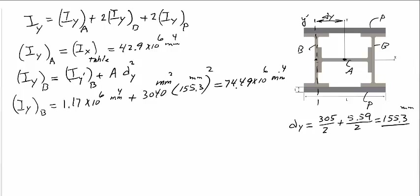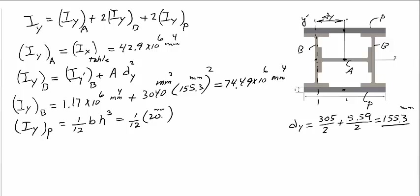For each plate's moment of inertia about the Y axis, the centroid of the plates lies on the Y axis, so the parallel axis theorem is not required. The moment of inertia is simply (1/12) × base × height³, where base is the plate thickness (20 mm) and height is the plate length (412 mm)³, giving 0.283 × 10⁶ mm⁴.